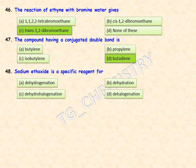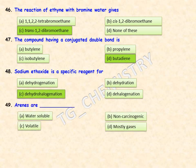Sodium ethoxide is a specific reagent for which reaction — dehydrogenation, dehydration, dehydrohalogenation, or dehydrogenation? Sodium ethoxide is very specific for dehydrohalogenation — option C is the right answer.